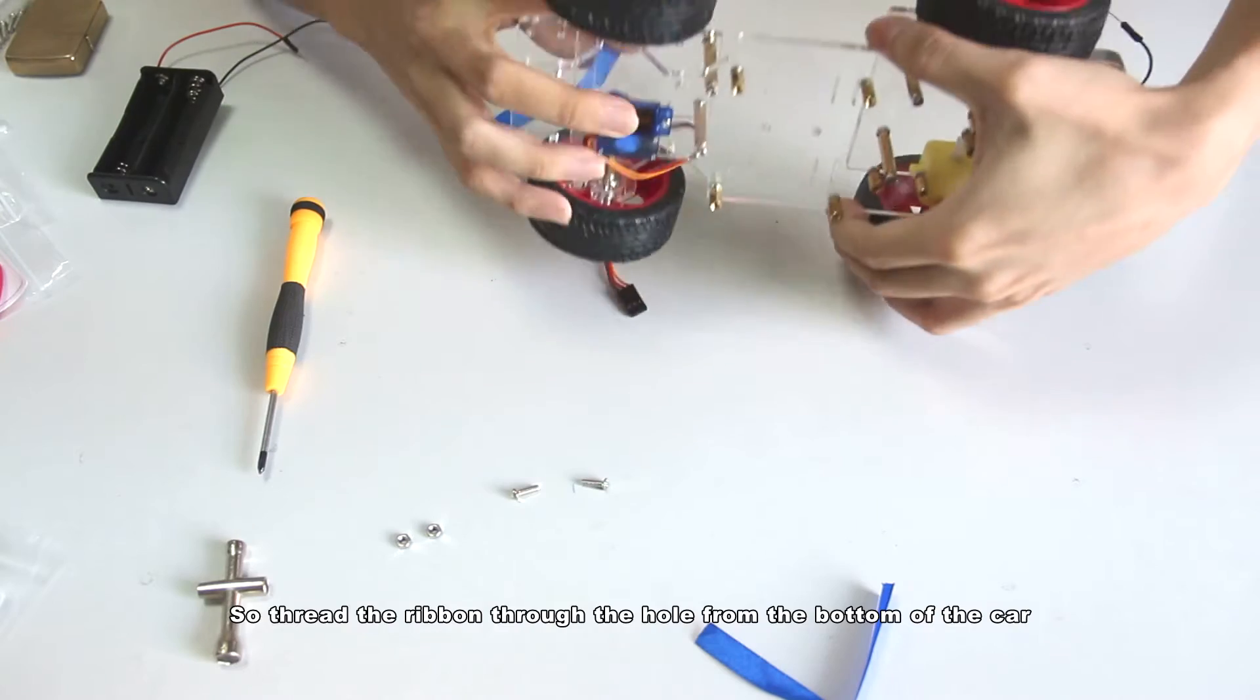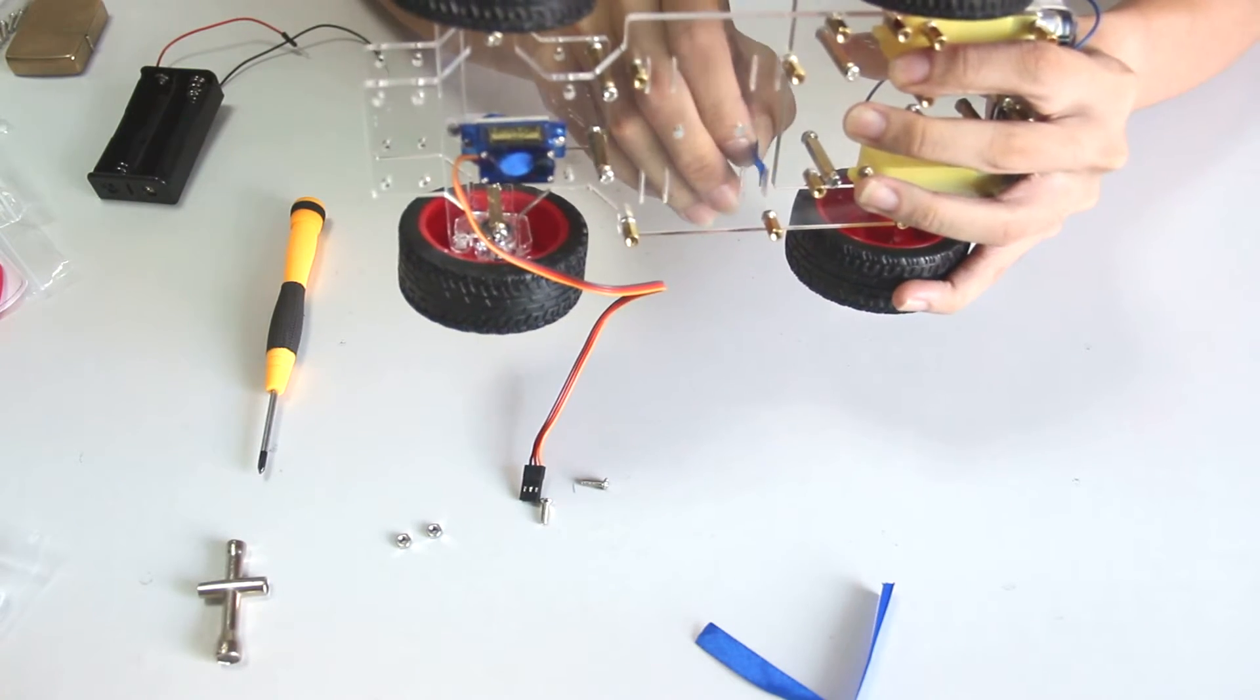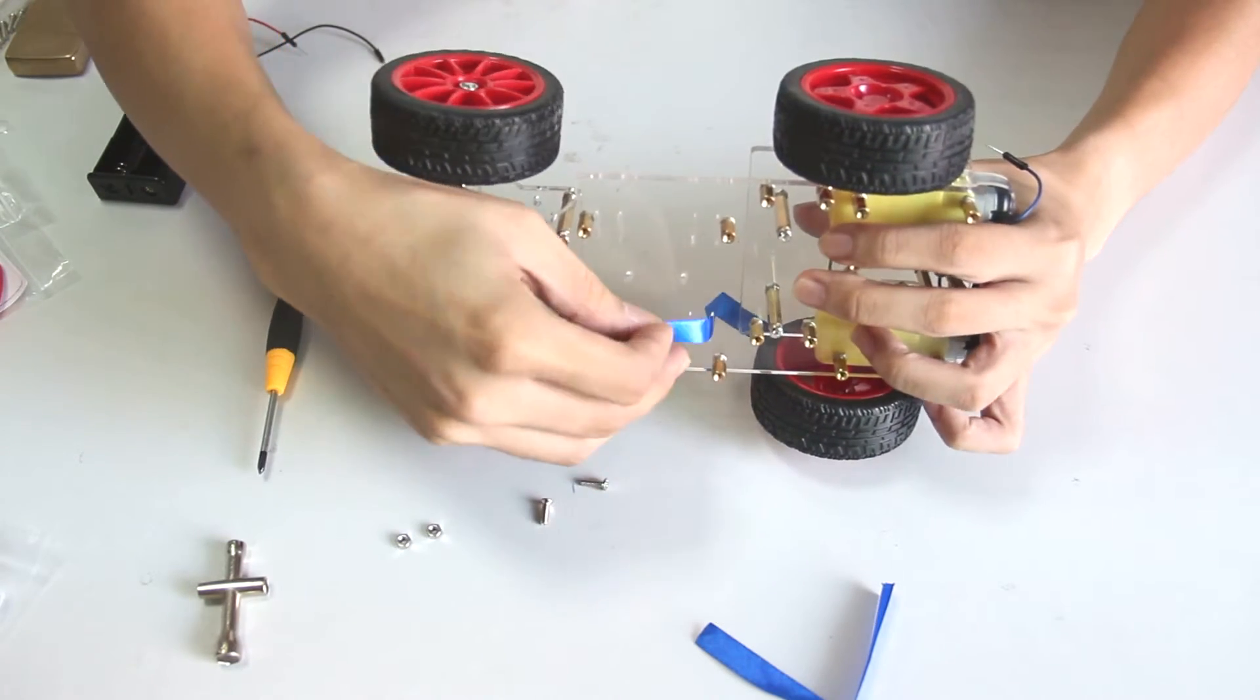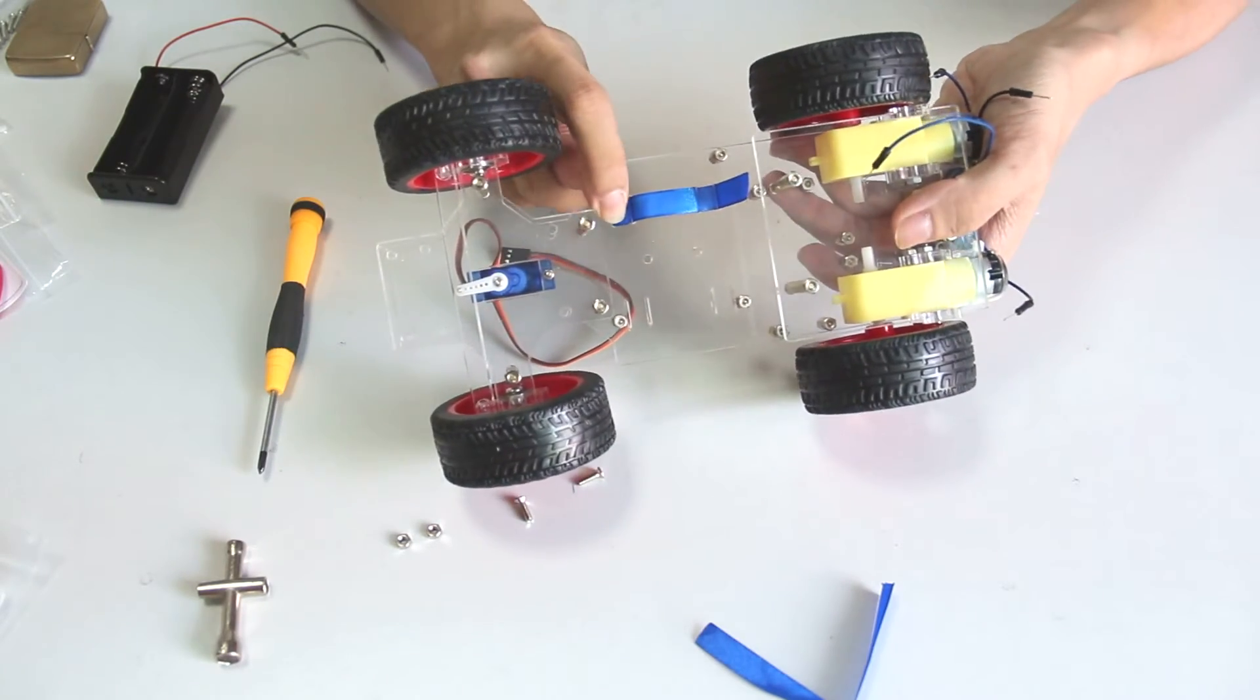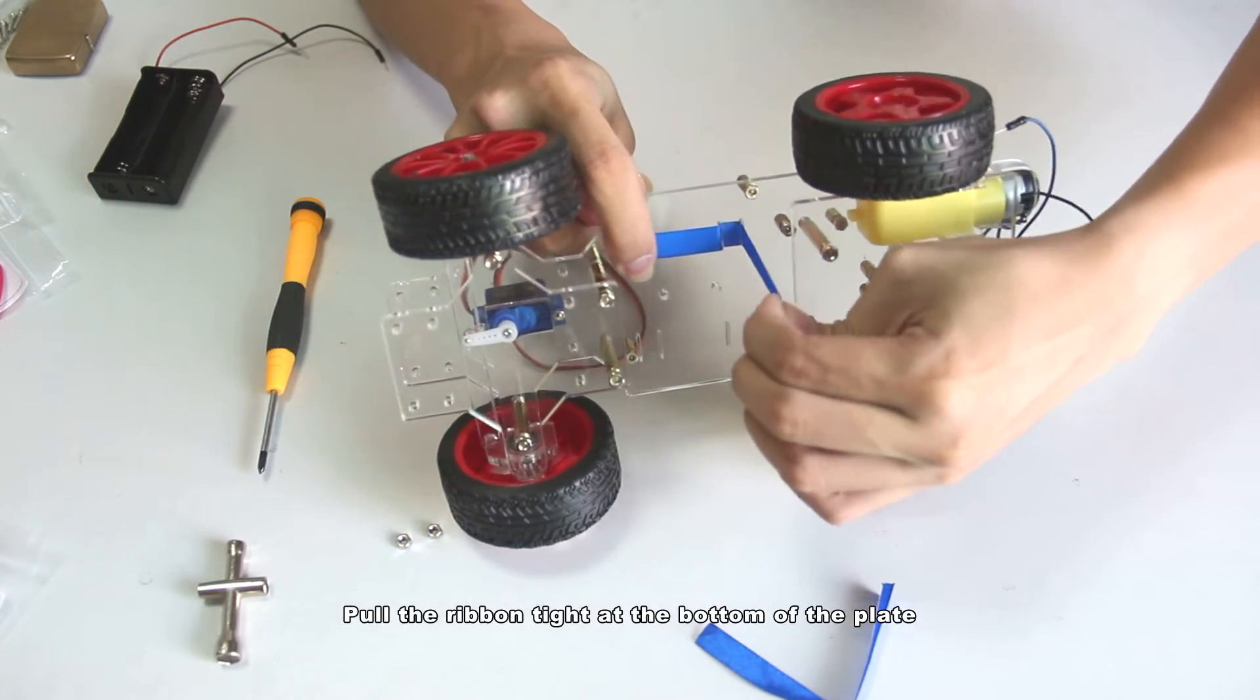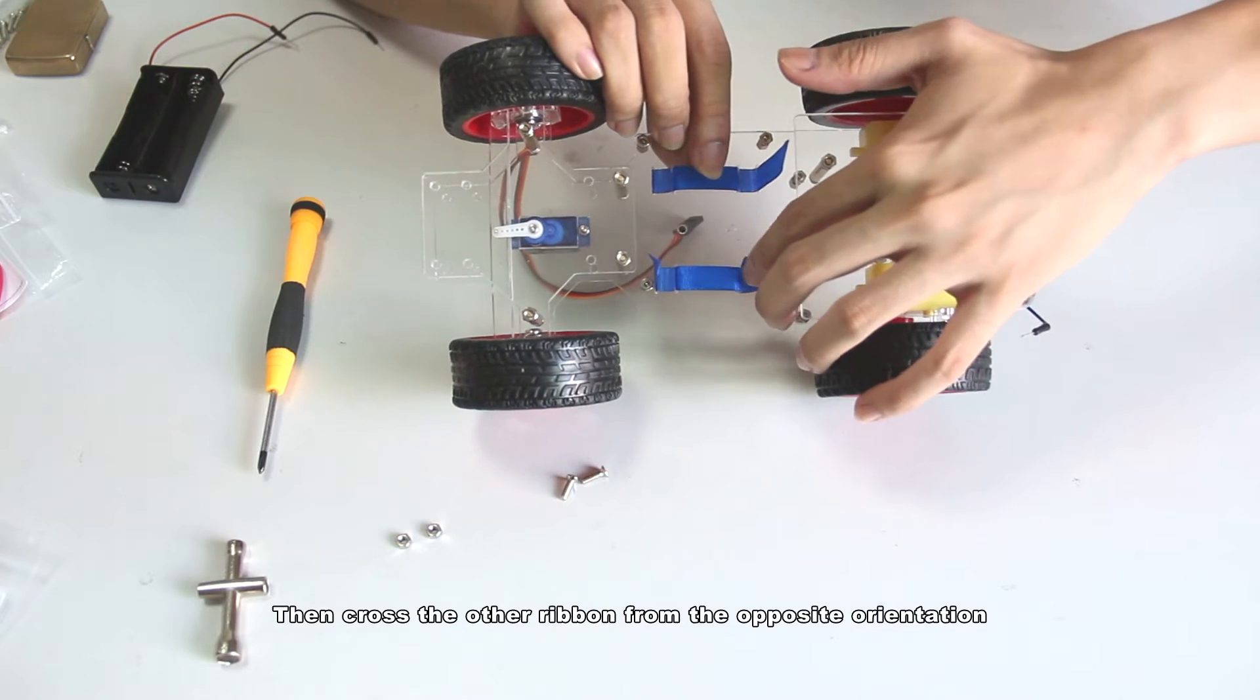Thread the ribbon through the hole from the bottom of the car, then back to the bottom, through the plate to the surface. Pull the ribbon tight at the bottom of the plate. Then cross the other ribbon from the opposite orientation.